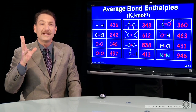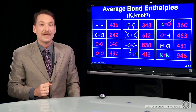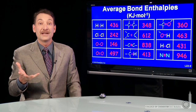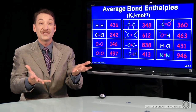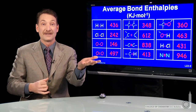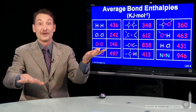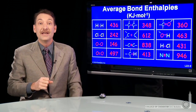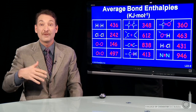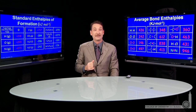We've also calculated reaction enthalpies a different way: take the enthalpies of formation of all the reactants and subtract away the enthalpies of formation of all the products. To do that, we need a table of standard enthalpies of formation.